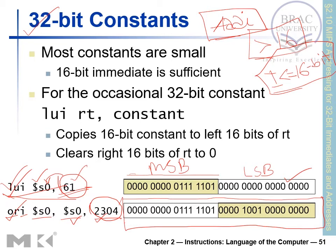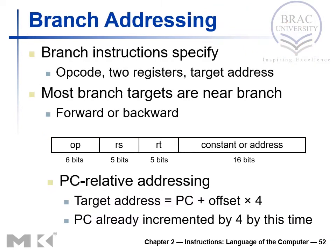This way we can store or transfer more than 16-bit values into a register. The value 61 is represented within 16 bits, and 2304 is also within 16 bits, but together these two values require 32 bits. So this is how we store a 32-bit value — we cannot do it in one go, but with LUI and ORI together, we can achieve it.